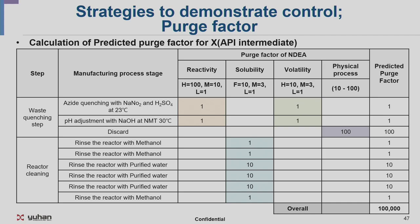Next is calculating the predicted purge factor for product X — our API intermediate — specifically the waste quenching step and the reactor washing process. We calculated the purge factor for the reactor. To do this, physicochemical parameters — reactivity, solubility, volatility, and other parameters — were reviewed, rated, and calculated. After the theoretical calculation, the purge factors in our process showed an overall predicted purge factor of 100,000 for our product.